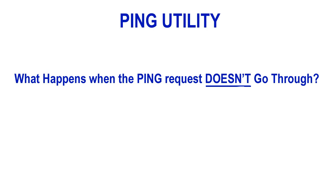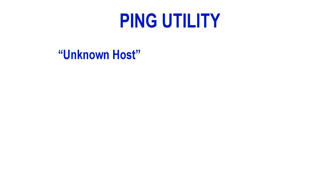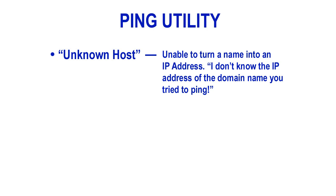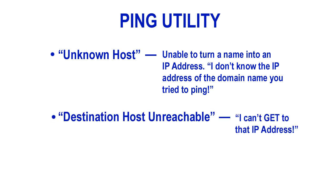But what happens when ping cannot reach the other machine? You'll find there can be important clues in the readout you get when the ping doesn't go through. The response may differ depending on your operating system, but there are a couple of basic failure responses. Unknown host means ping is unable to turn a name into an IP address — it usually means you used an invalid or unused DNS name. The other common response is destination host unreachable, which means it can't get to that IP address and usually indicates a possible routing problem.